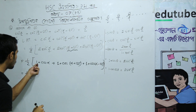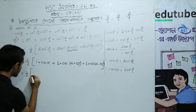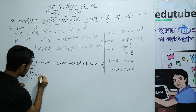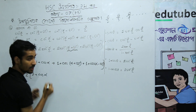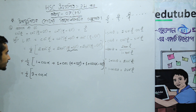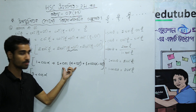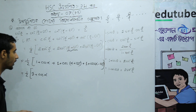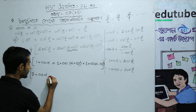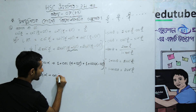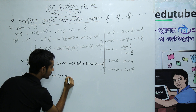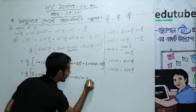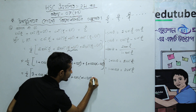So combining: 1 plus 1 plus 1 gives 3, plus cos alpha, and then cos(alpha plus 120 degrees) plus cos(alpha minus 120 degrees). The whole expression equals half of that sum.